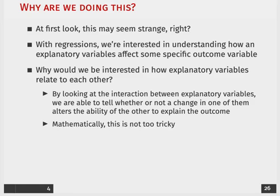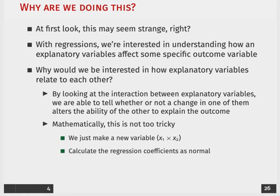And what's nice with dummy variables and interactions is mathematically adding this is not very tricky. We're just going to make a new variable that's multiplying our two dummy variables, x1 and x2, by each other. And then we're going to calculate the regression coefficient as normal with just a third estimated beta for the joint interactive relationship between x1 and x2.